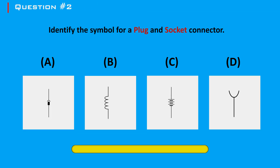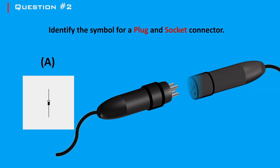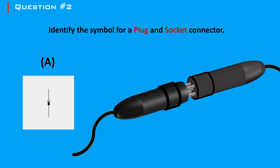Question 2: Identify the symbol for a plug and socket connector. The answer is A. The plug is the connector attached to an electrically operated device, often via a cable. It has prongs or pins that fit into the socket. The socket is fixed in place, usually on walls or equipment, and is connected to an electrical circuit. It has slots or holes that accept the prongs of the plug. When the plug is inserted into the socket, the prongs or pins make contact with the conductive elements inside the socket, completing the electrical circuit and allowing current to flow from the power source through the socket and into the device via the plug.